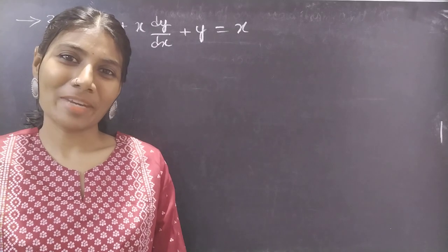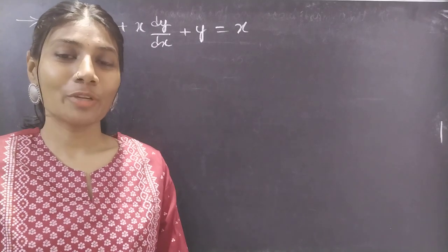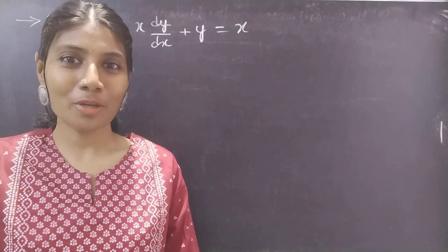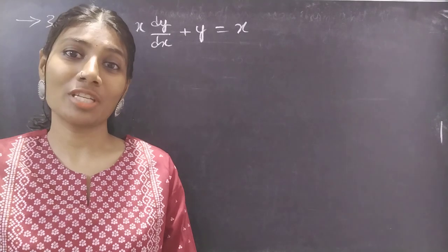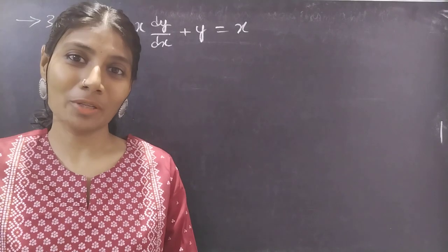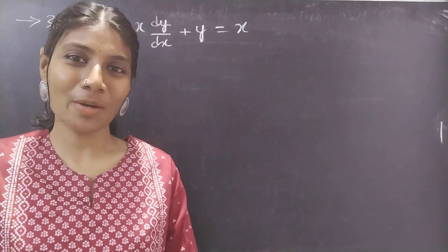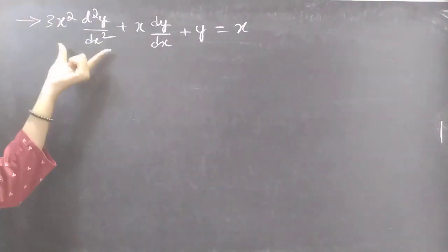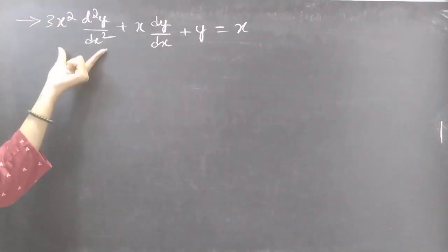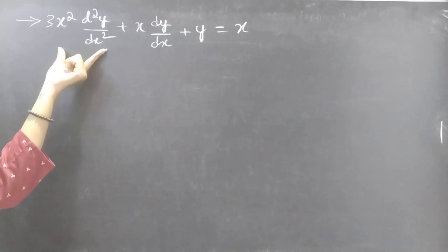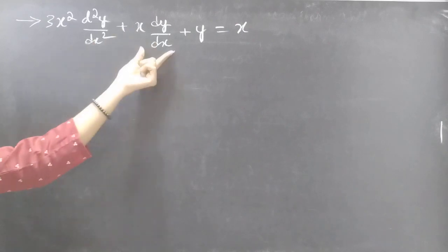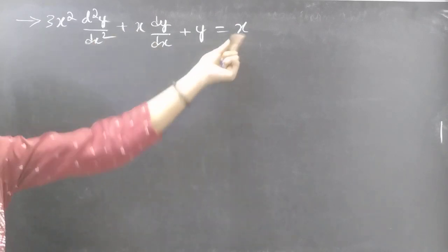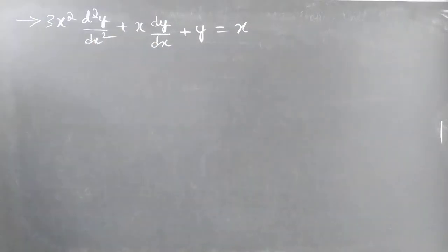Hello everyone, this is Zia Kalpana here. In this video we are going to solve a differential equation from higher order linear differential equations with variable coefficients. So let's get going. Problem: Solve 3x squared into d squared y by dx squared plus x into dy by dx plus y equals to x.